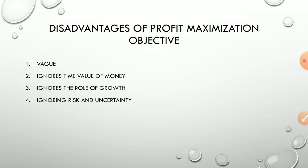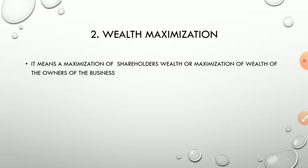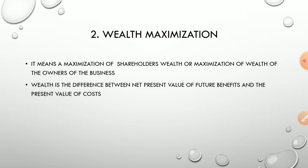The second objective is wealth maximization — meaning maximization of shareholders' wealth or the wealth of owners of the business. Shareholders are considered as owners of the business, so maximizing their wealth is called wealth maximization. Wealth here means the difference between the present value of future benefits and the present value of cost. For example, 100 rupees today vs. the value of 100 rupees after 10 years — that present value difference is what we calculate.